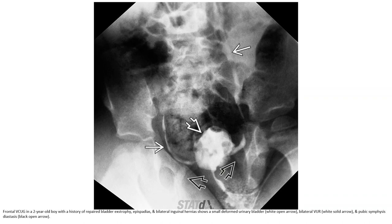This is a video of VCUG in a 2-year-old boy with a history of repaired bladder exstrophy, epispadias, and bilateral undescended testes, showing a small reformed urinary bladder, bilateral VUR, and pubic symphysis diastasis.